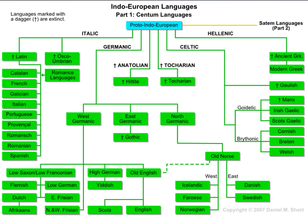Looking at the Indo-European language family tree, a small dagger symbol — which looks like a cross — indicates that language is extinct. Sometimes a language is extinct because it evolved into other languages; other times speakers completely abandoned it, so there are different reasons.